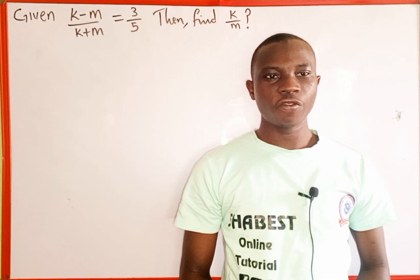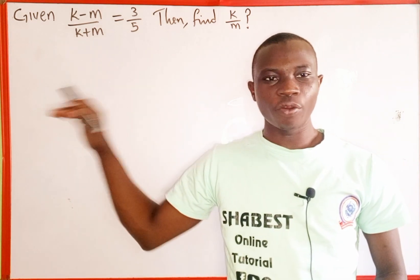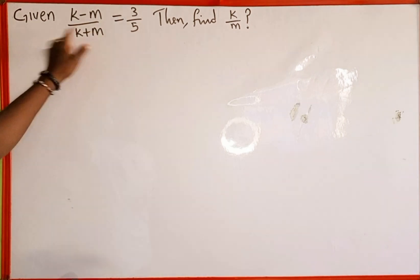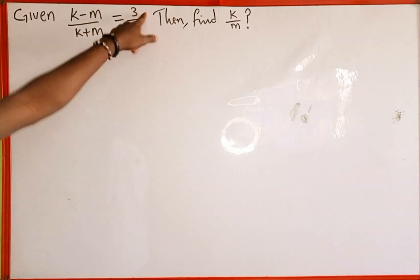In today's tutorial we are going to learn how to solve for the value of k over m from this equation. The given equation is k minus m over k plus m equals 3 over 5, and we are asked to find the value of k over m.